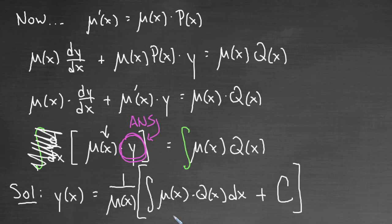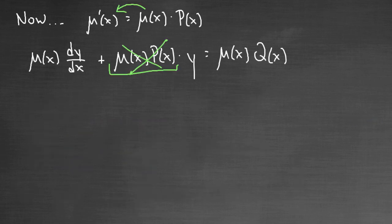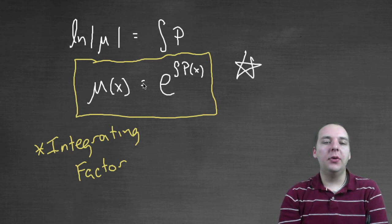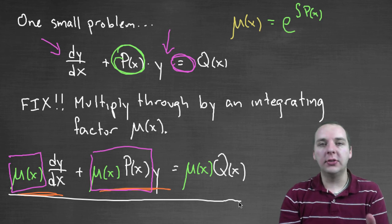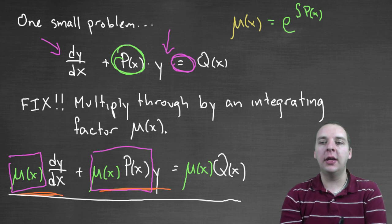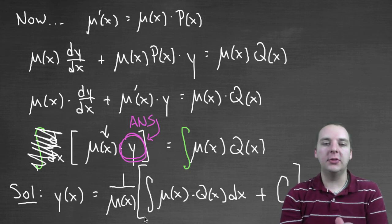As complicated as this sounds, in practice it's actually not that bad. You might not be believing me, but if you hang with me and wait until I do an example, you'll see this is pretty straightforward once you've found mu(x). The key things you need are: knowing the definition of the integrating factor, and knowing to distribute it through both sides of the differential equation. If you know just those two basic facts, you can solve a linear differential equation even if you don't understand every detail of how it worked out.